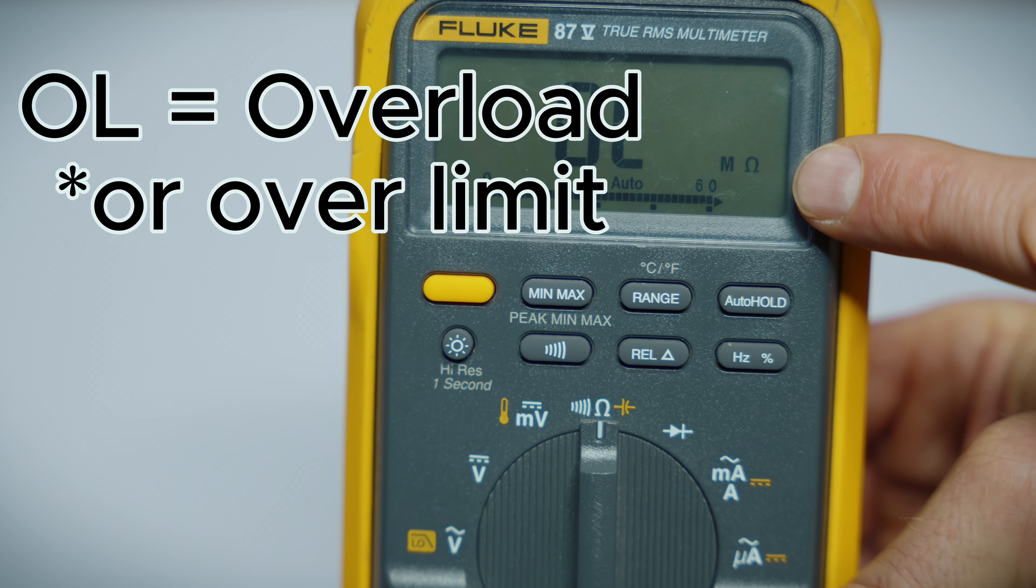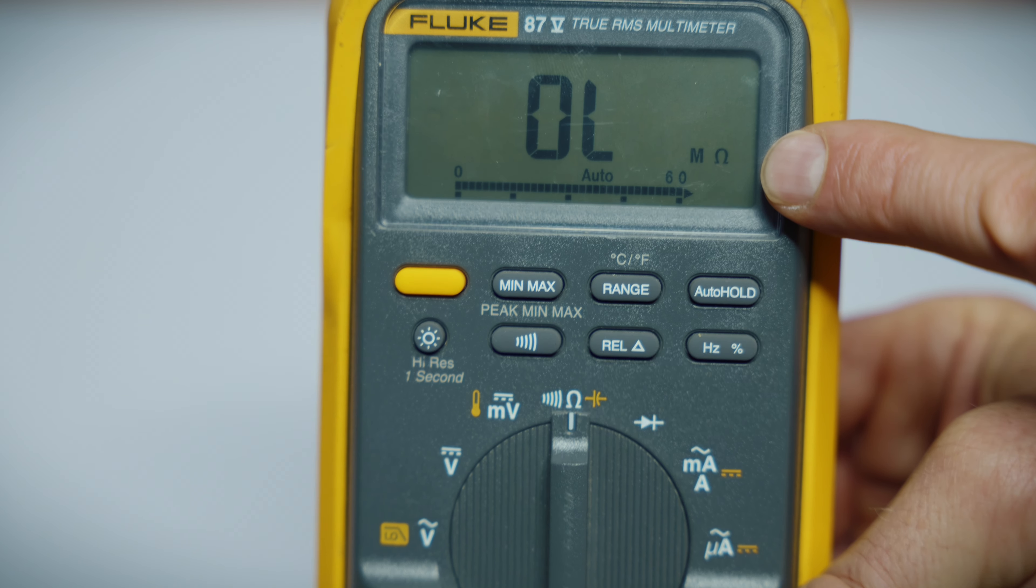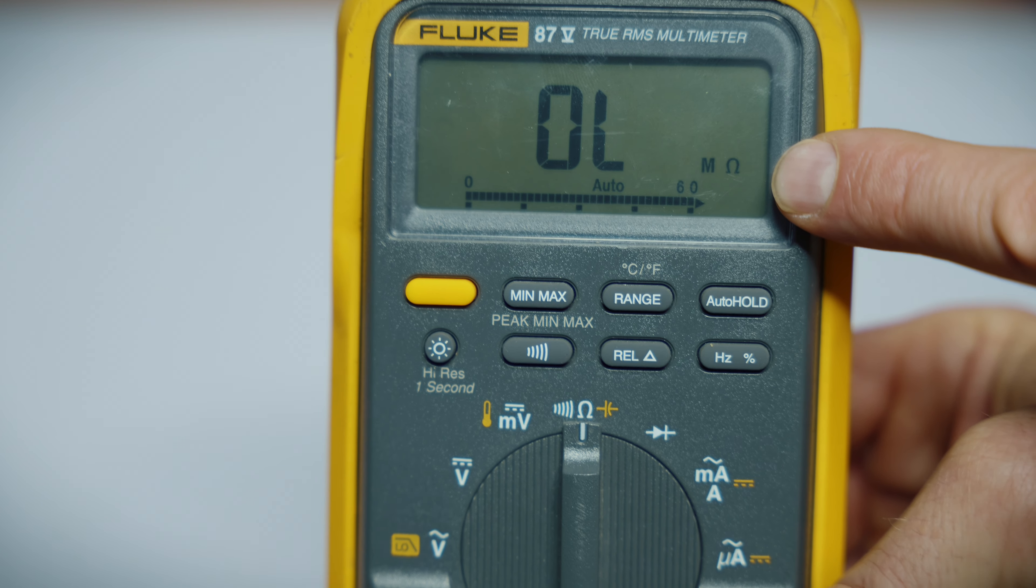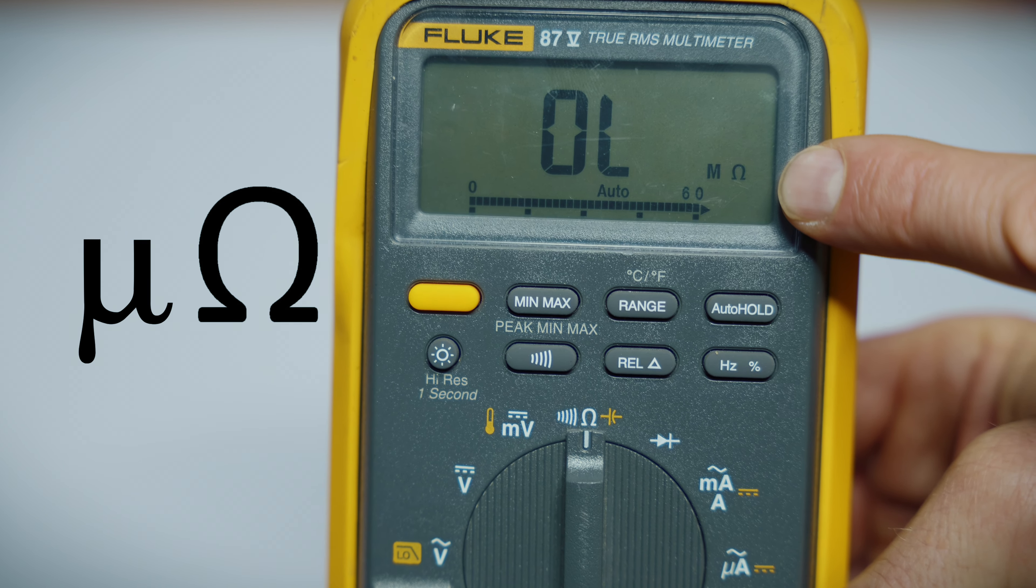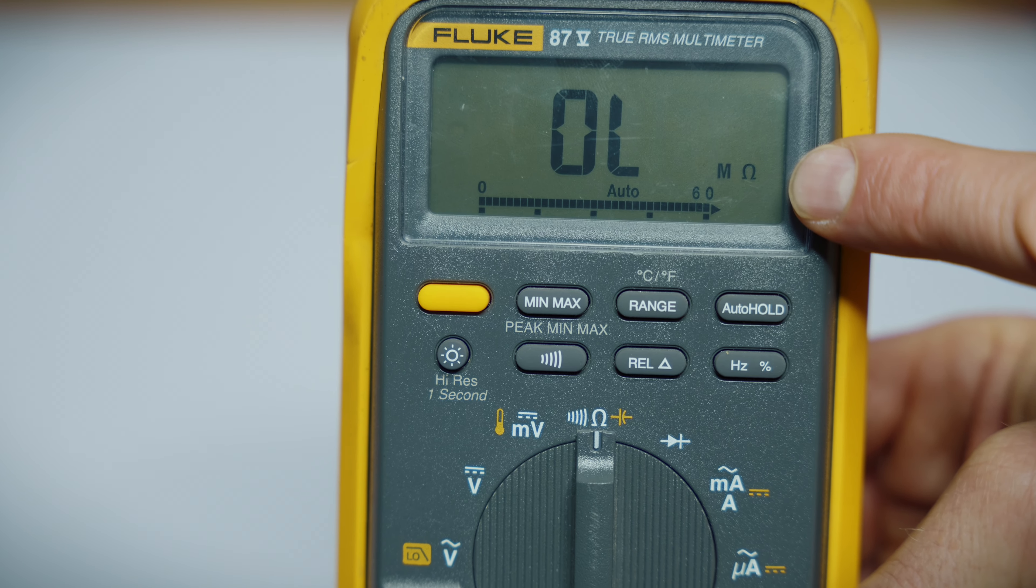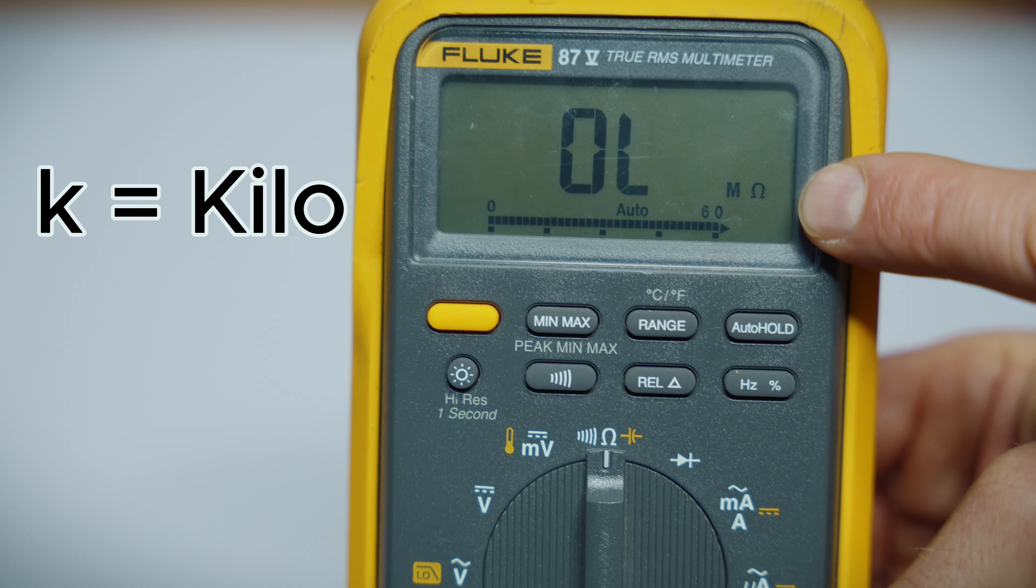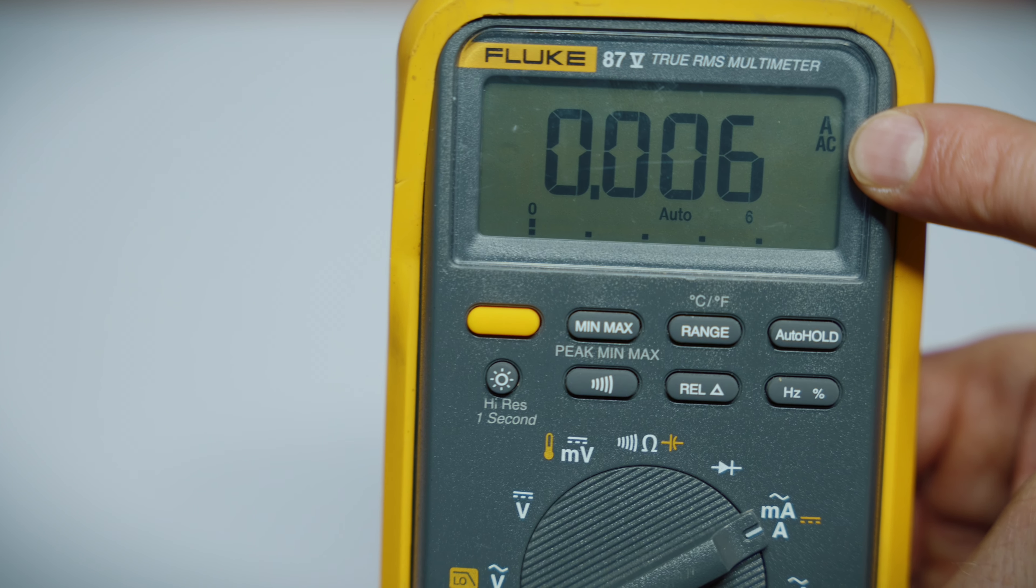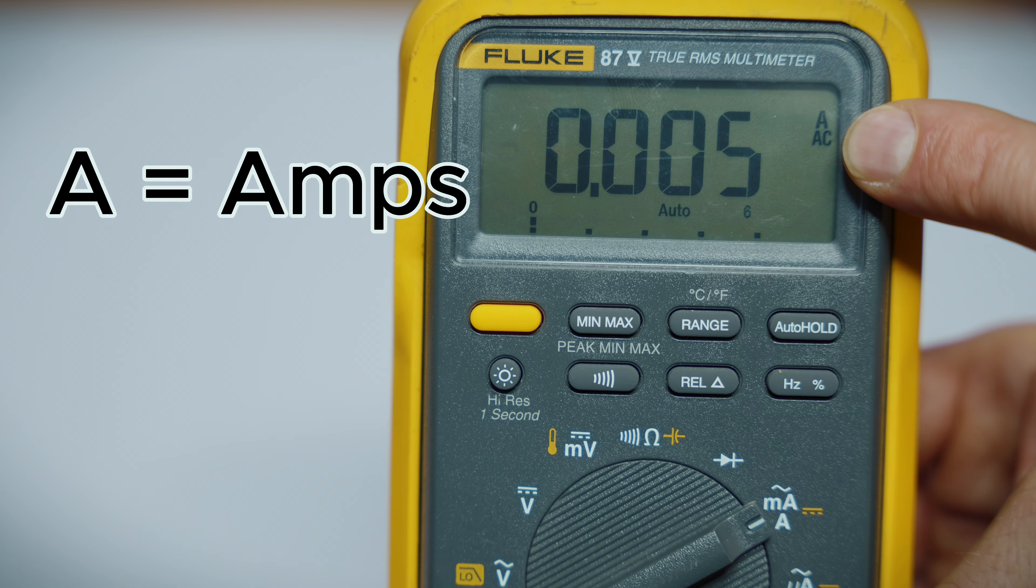Now you have the capital M, which stands for mega. So mega ohms, that's the horseshoe or the omega symbol. So right now, nothing hooked up or open, which means there's infinity ohms. Now that could change to a small m, which would be milli ohms, or even the little U symbol, which means micro ohms.